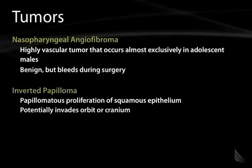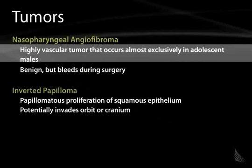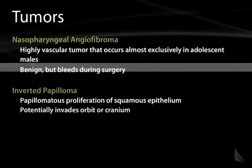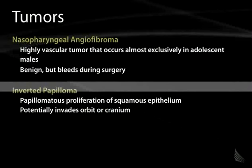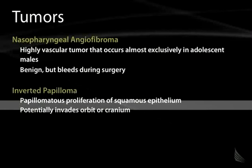Tumors of the nasopharynx include the nasopharyngeal angiofibroma, common in adolescent males. As the name implies, these are highly vascular tumors that can be surgically removed but often bleed excessively during removal, presenting a challenge to the surgical team. Inverted papillomas grow inward rather than outward and are a proliferation of squamous epithelium that, given their inward growth, can affect surrounding structures such as the orbit or cranium.